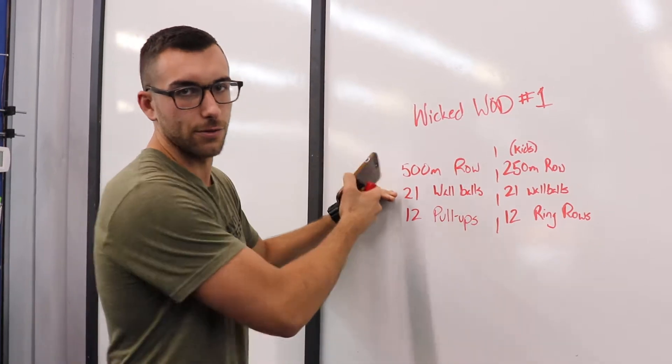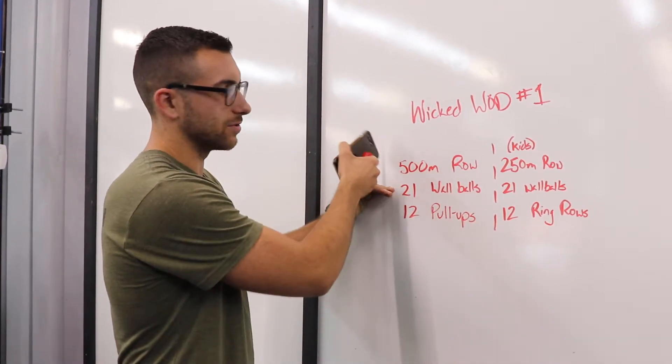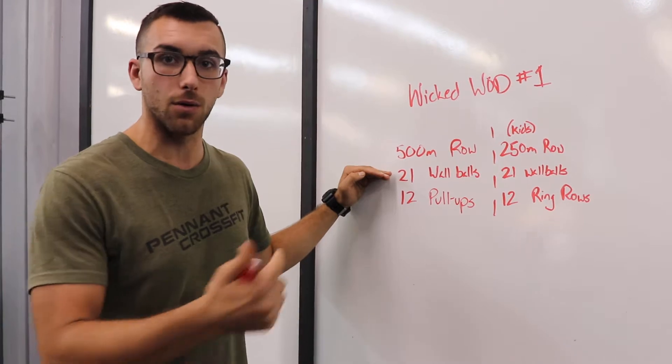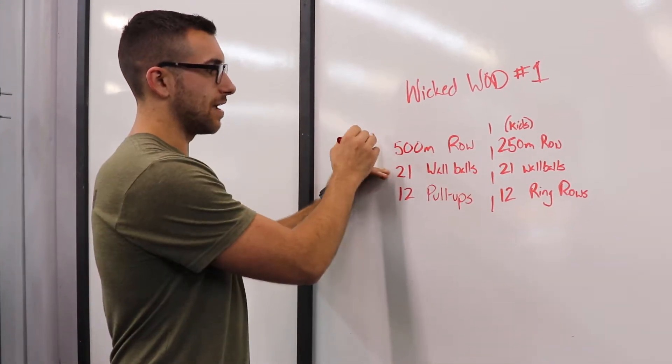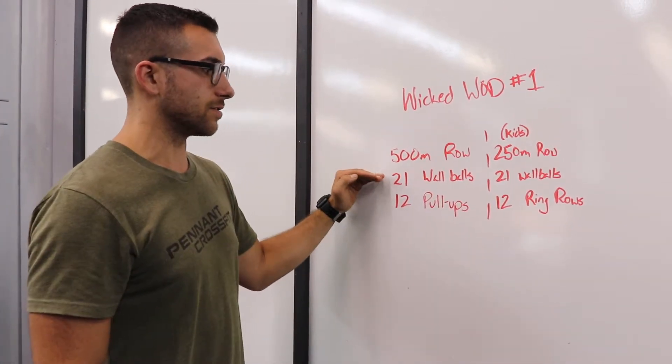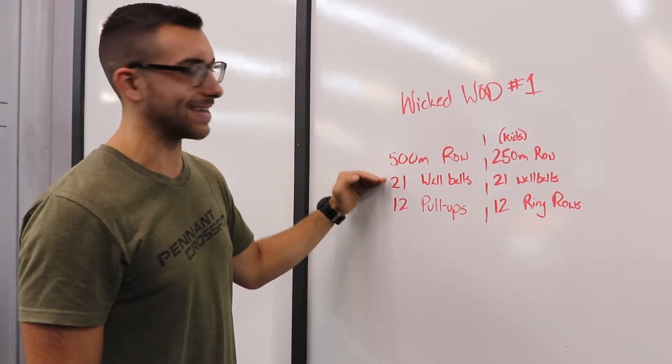While they're doing those 21 wall balls, partner two can start their 500 meter row. Let's say partner two finishes their 500 meters and partner one is still working on their wall balls—they can't move up to those wall balls until partner one's done.